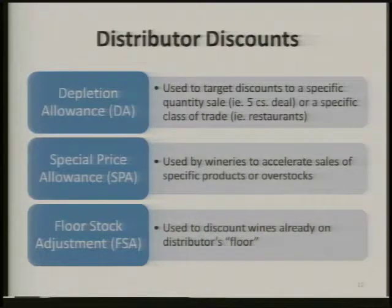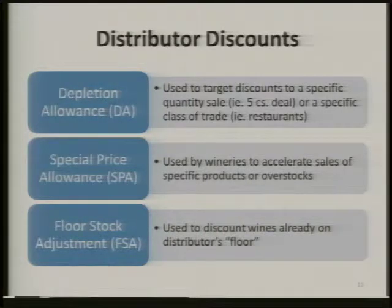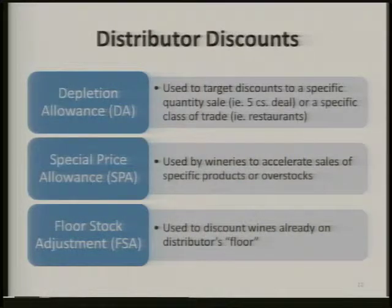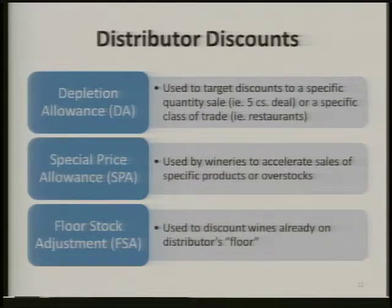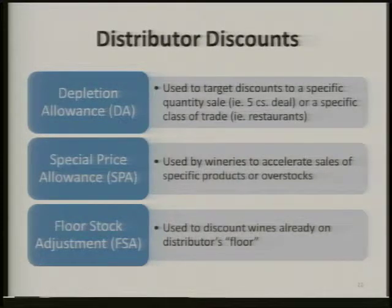A floor stock adjustment — you'll hear about this occasionally. When you've given an SPA and you go to the distributor and say starting July the 2011 Pinot Gris is now $72 a case, and the distributor says he's got 32 cases on the floor already. You give him a floor stock adjustment: on July 1st he sends his inventory, and you send a discount of $28 a case for everything on his floor.